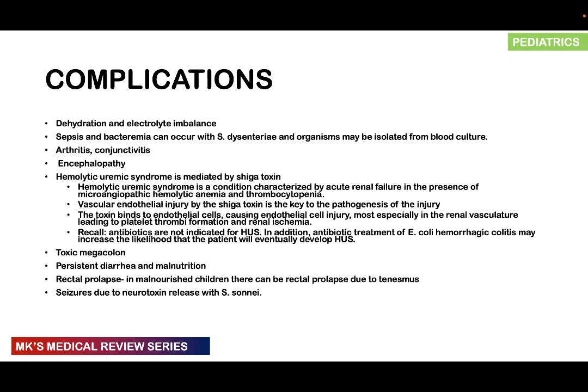Vascular endothelial injury by Shiga toxin is key to the pathogenesis of HUS. The toxin binds to endothelial cells, causing injury, predominantly in the kidneys, leading to thrombi formation and renal ischemia. Antibiotics are not indicated for HUS; indeed, antibiotic treatment of hemorrhagic E. coli colitis may actually increase the likelihood of developing HUS, which is why antibiotics are often avoided in bloody diarrhea.